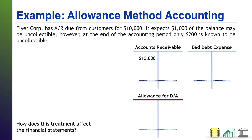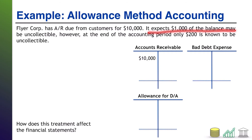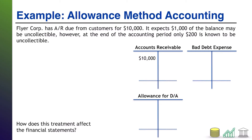FlyerCore has AR due from customers for $10,000 — notice in the receivables account there's a $10,000 balance. It expects $1,000 of the balance might be uncollectible. However, at the end of the accounting period, only $200 is known to be uncollectible. Once you expect an uncollectible, you establish your contra asset — your allowance account — for the estimated uncollectible portion.